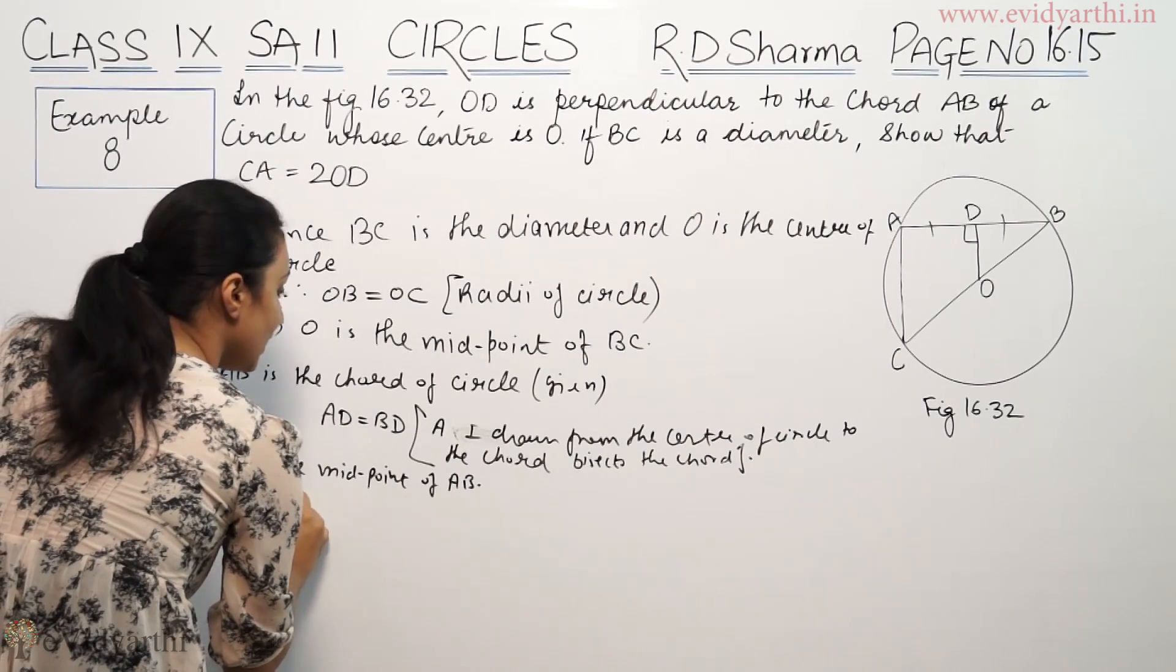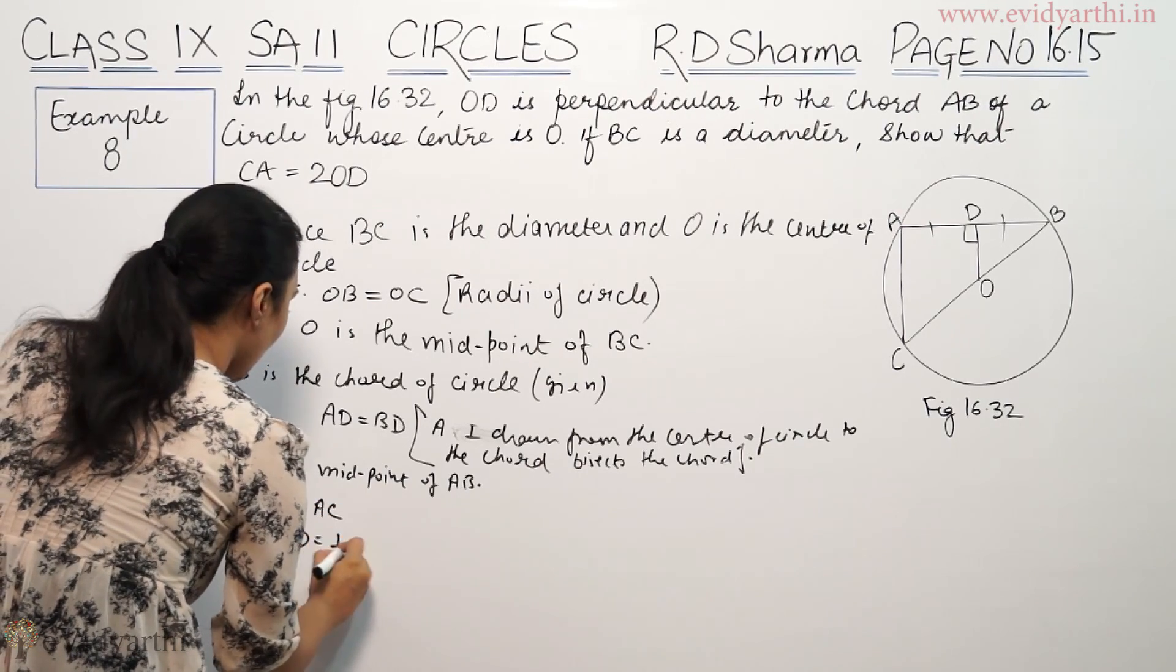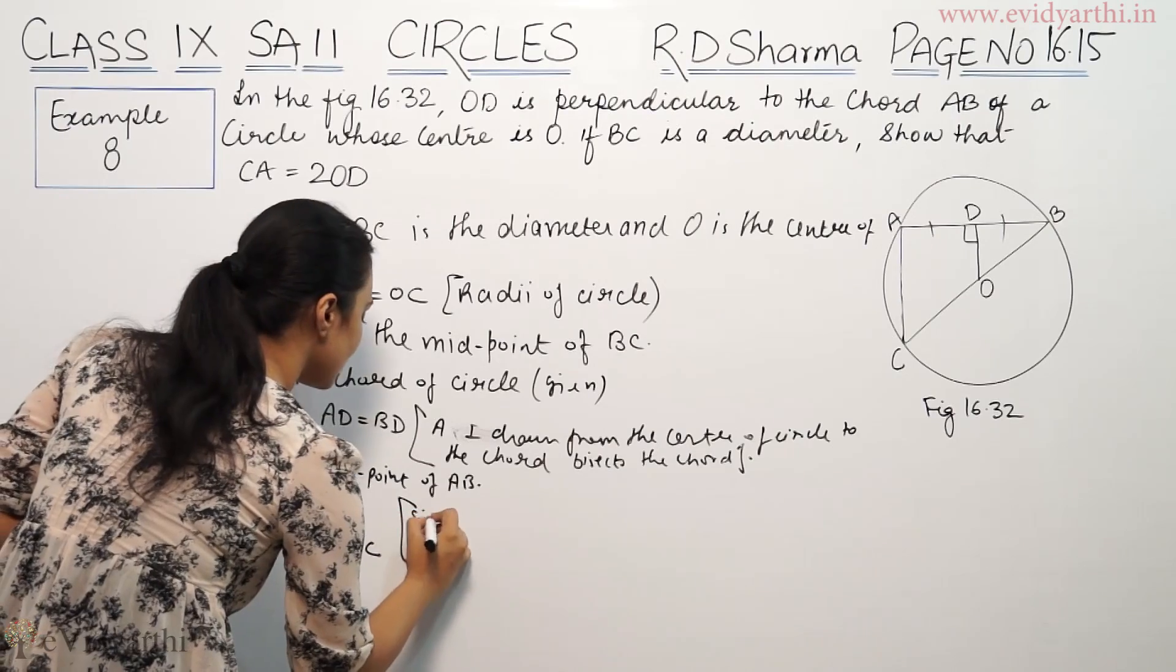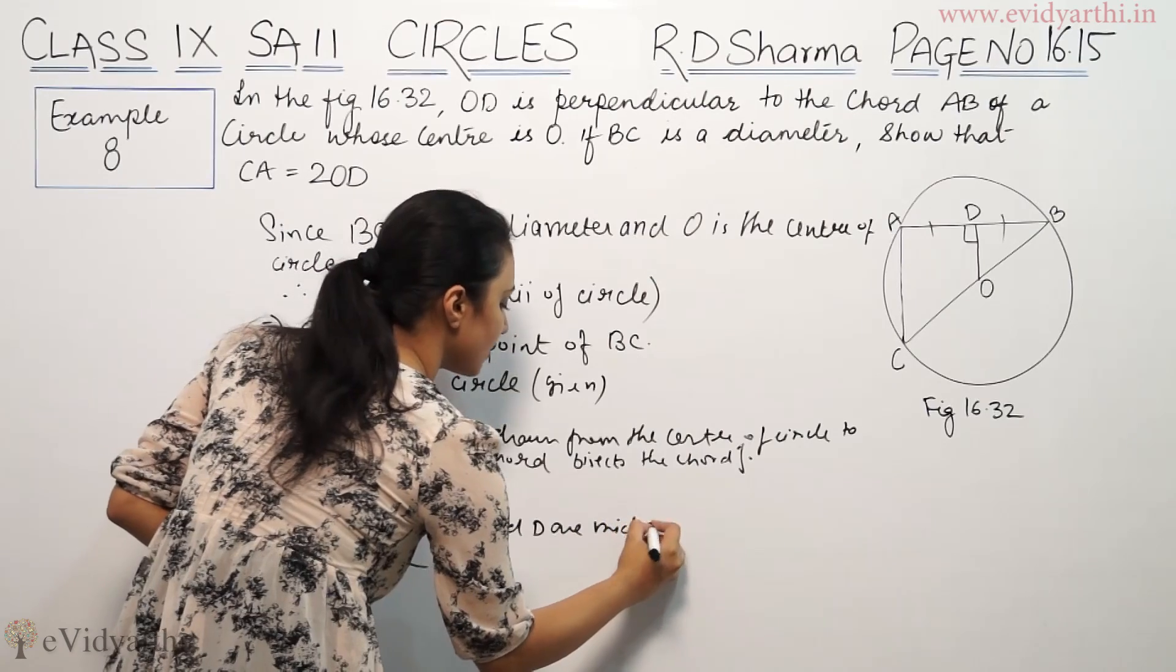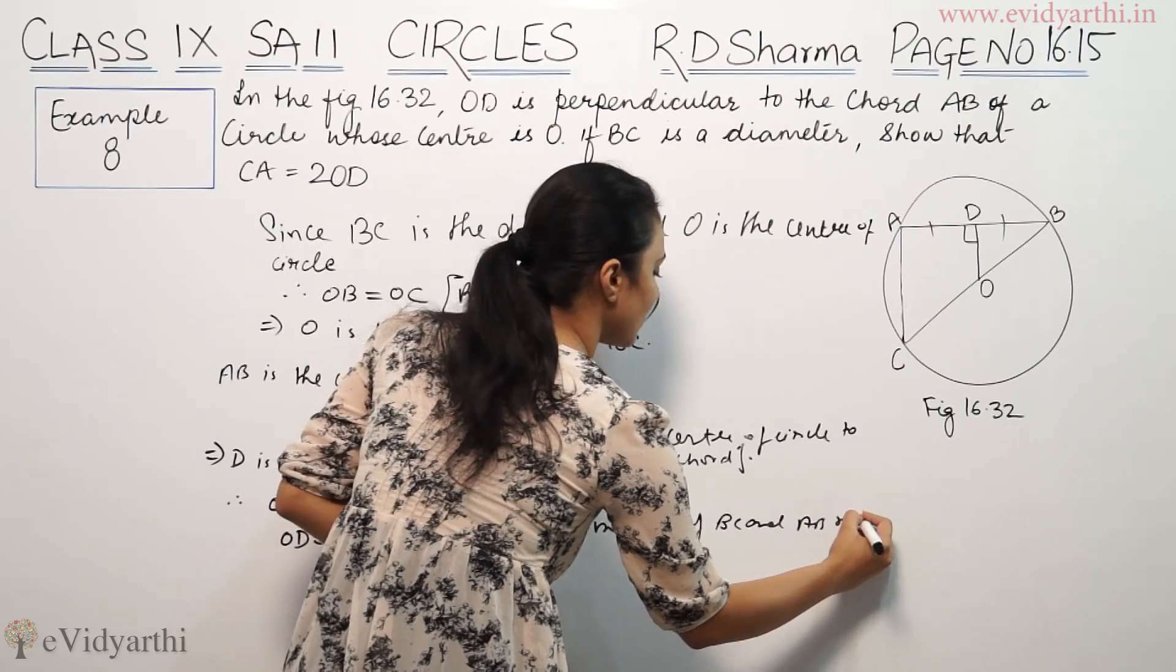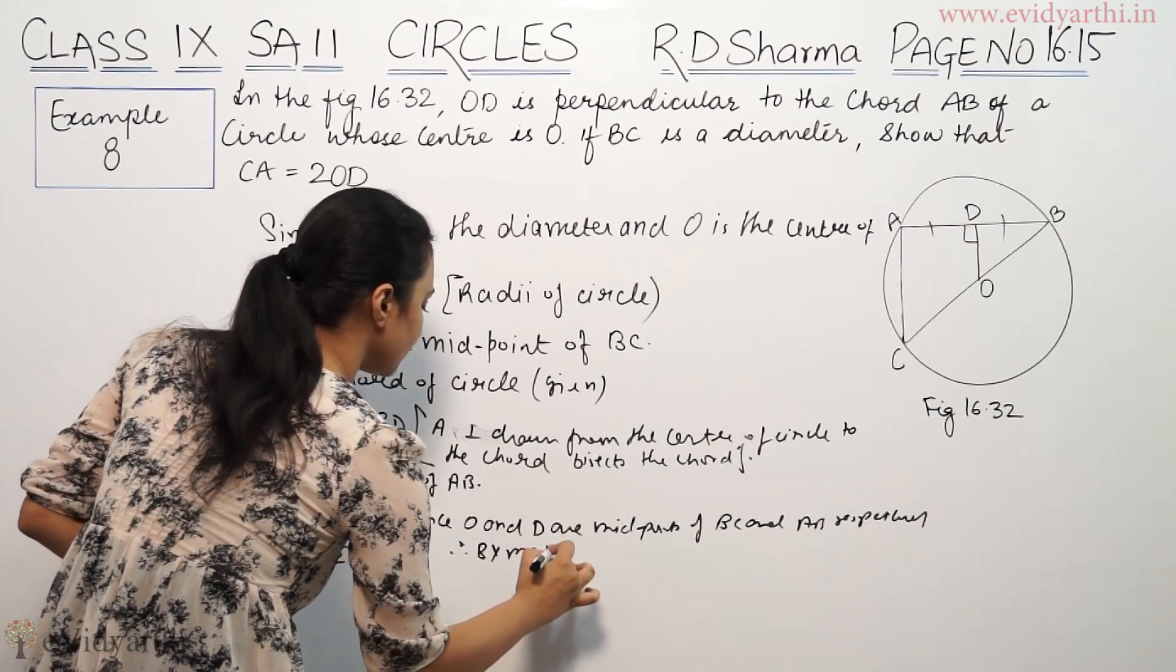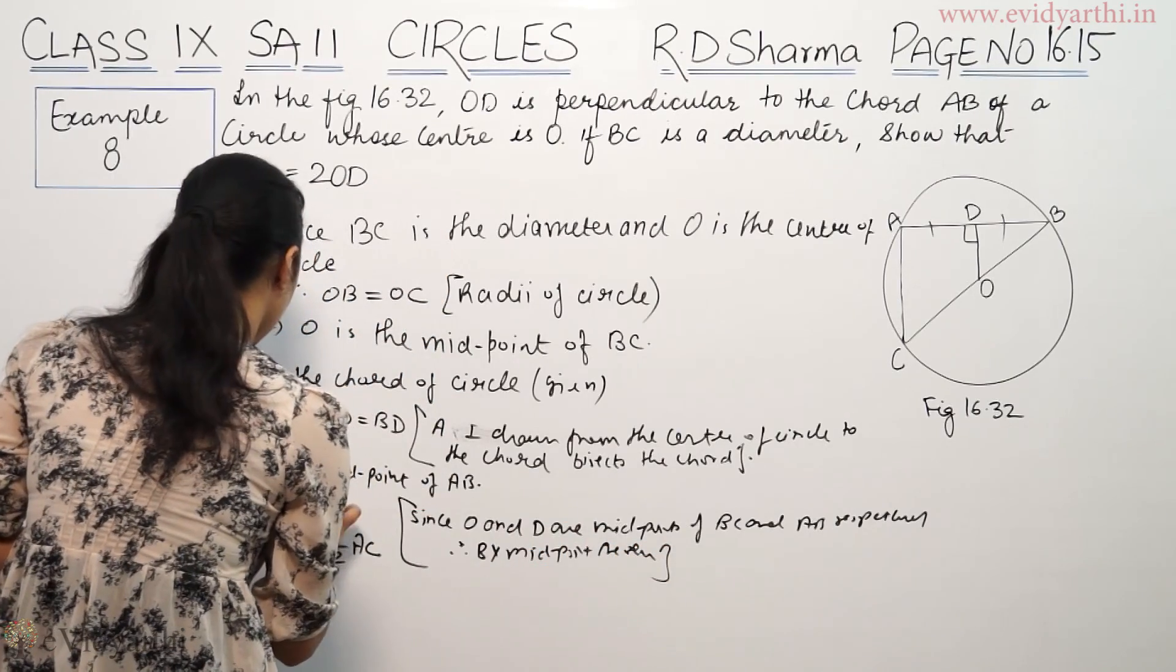Since O and D are midpoints of BC and AB respectively, therefore by midpoint theorem in triangle ABC...